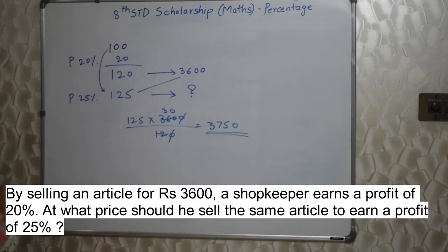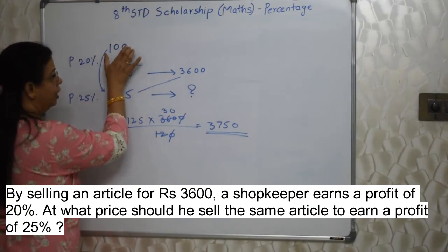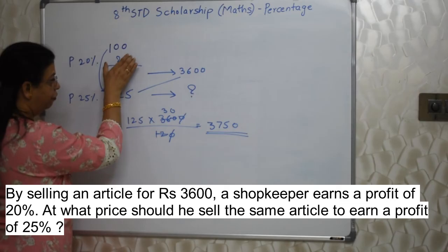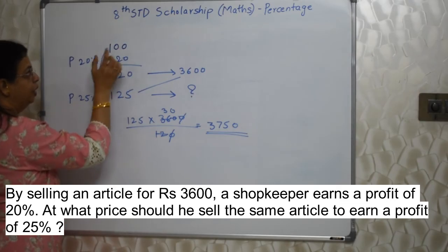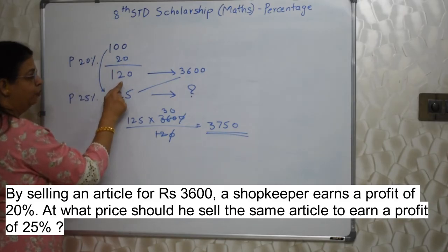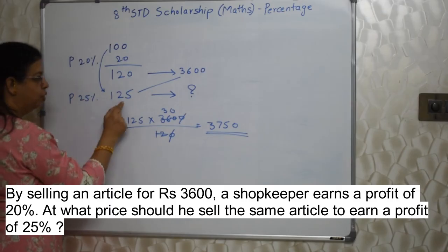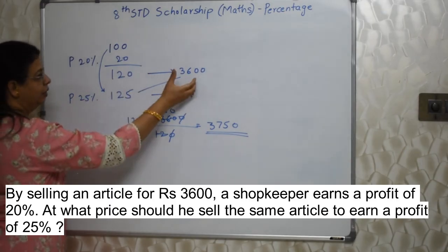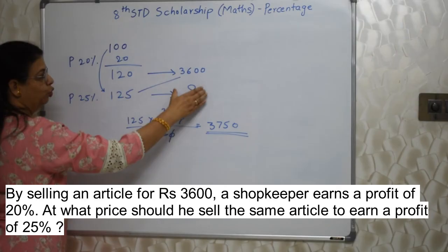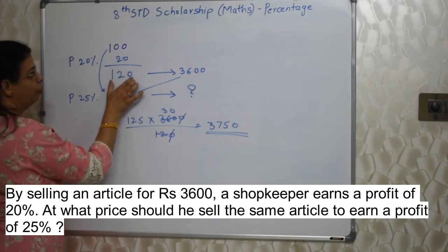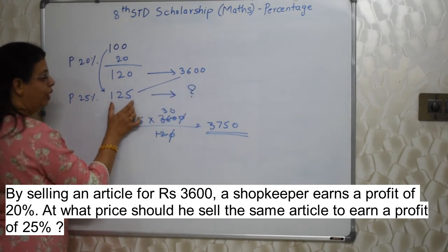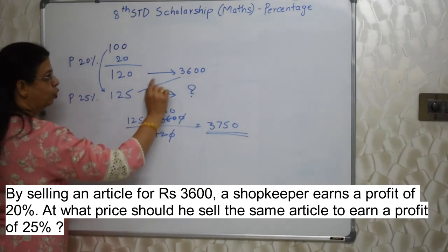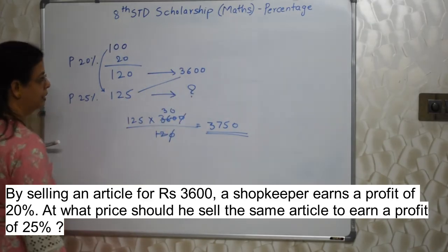We used 100 as a helping hand — the 100-family. If 100 is the original price, selling for 20% profit means 120; for 25% profit means 125. We related this family to the actual figure: 120 corresponds to 3600, so 125 corresponds to 3750. Cross multiplication gives us the answer easily.